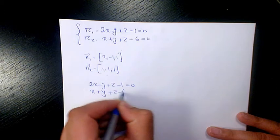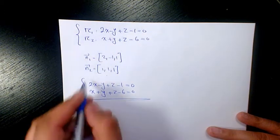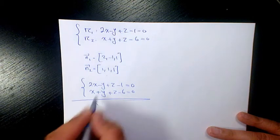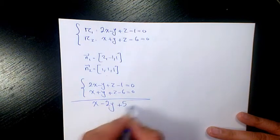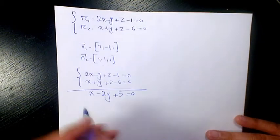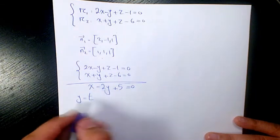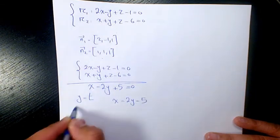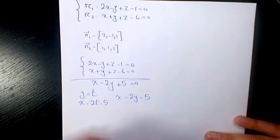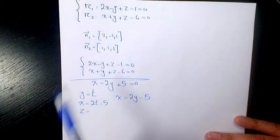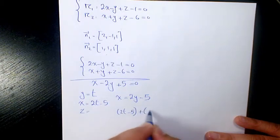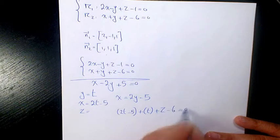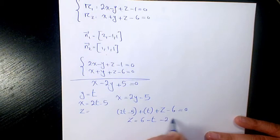So we have 2x minus y plus z minus 1 equals zero and x plus y plus z minus 6 equals zero. If I subtract them it's going to be x minus 2y equals negative 5 equals zero — wait, so x minus 2y minus 5 equals zero. Now let y equal t, so x equals 2t minus 5. Substituting back: x plus t plus z minus 6 equals zero, so z equals 6 minus t minus 2t plus 5, which gives z equals negative 3t plus 11.